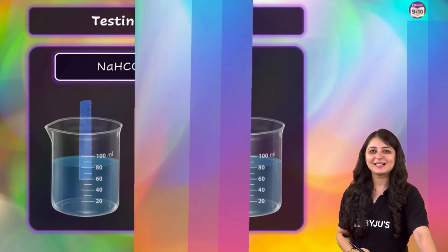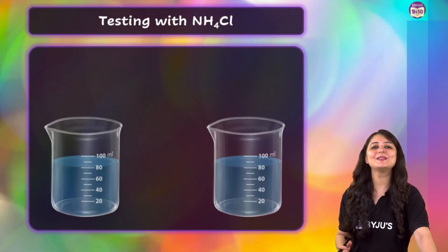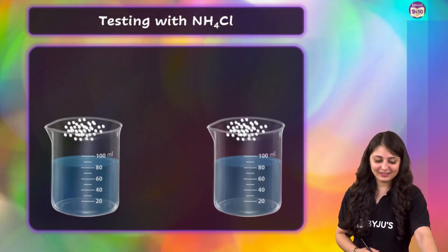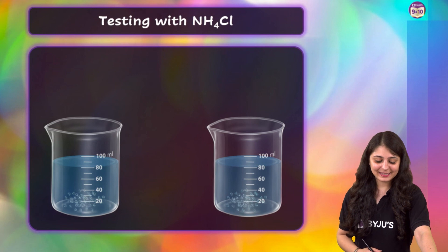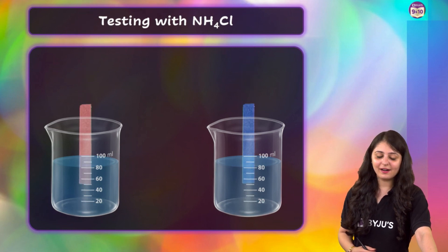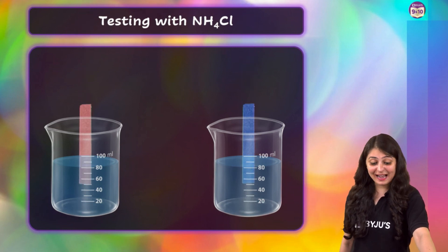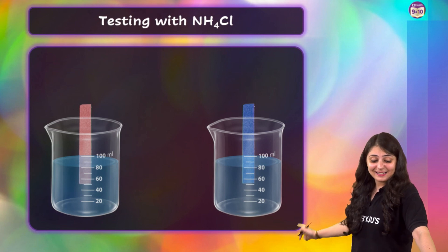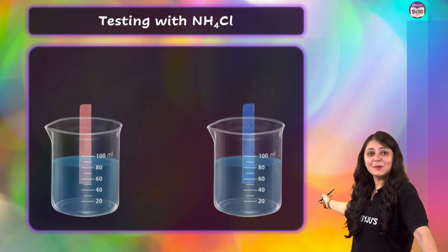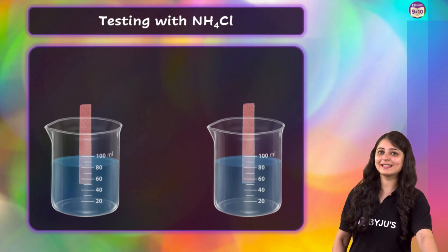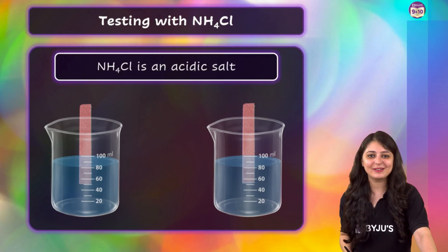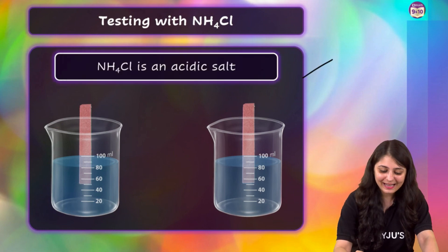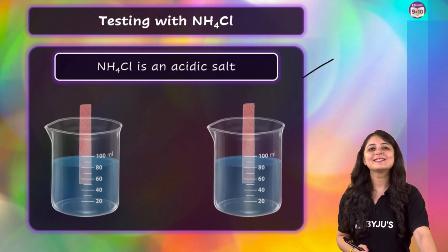Finally, coming to ammonium chloride. Let's add it and get ready with our litmus paper. Look at the blue litmus paper — it's turning red now, indicating that ammonium chloride is an acidic salt.